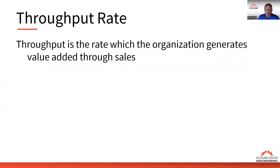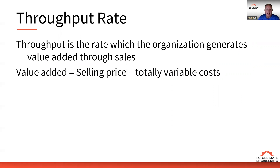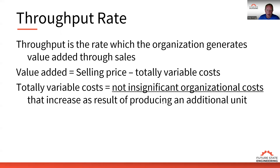So what is throughput rate? Throughput rate is the rate at which the organization generates value added through sales. Only when we sell an item to our customer do we generate throughput — putting it into inventory does not generate throughput. The value added is the selling price minus the totally variable costs that go into making that product or service.